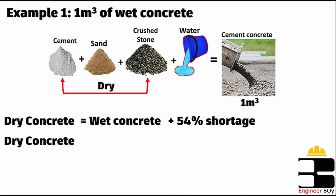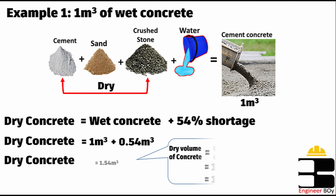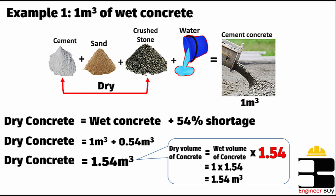We can say that dry concrete equals wet concrete plus 54% of wet concrete. So dry concrete equals 1 cubic meter plus 54% of 1 cubic meter, which is 0.54. Therefore dry concrete is 1 + 0.54 = 1.54 cubic meters. This means we have 1.54 cubic meters of dry concrete per cubic meter of wet concrete, so it's actually 1.54 m³ dry divided by 1 m³ wet.